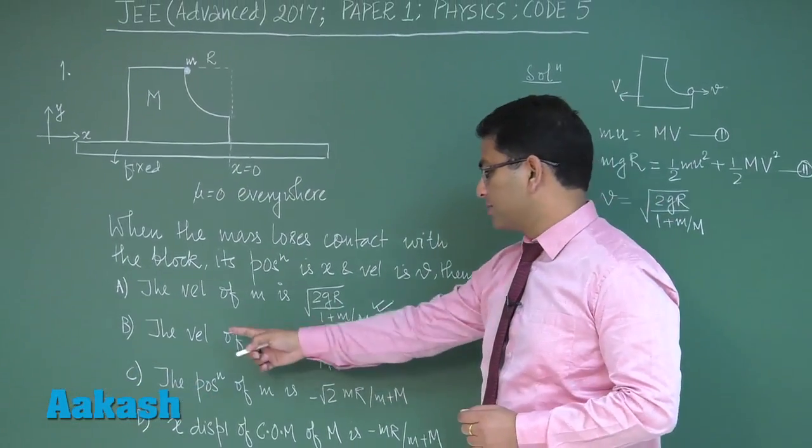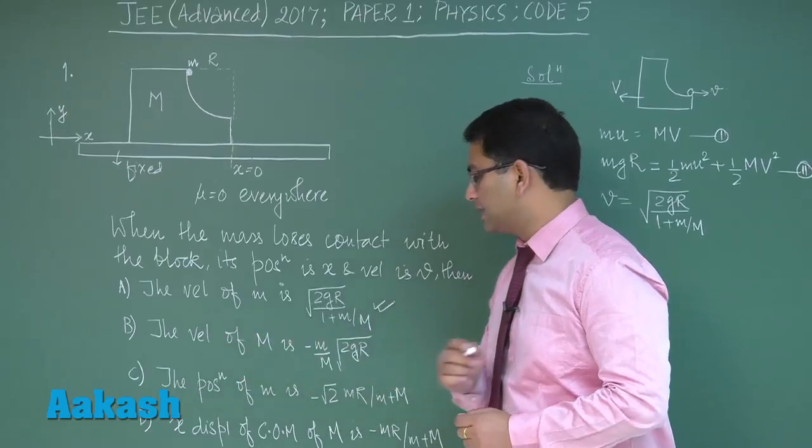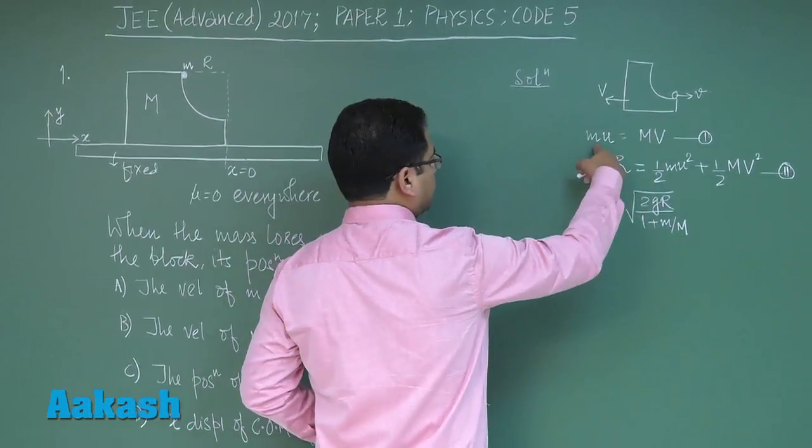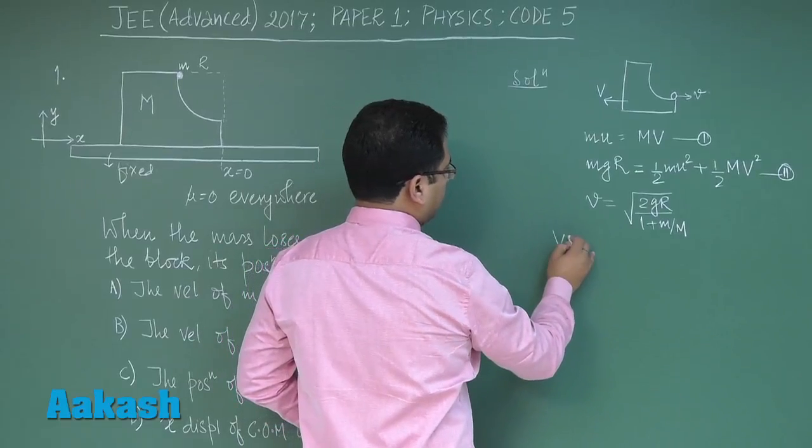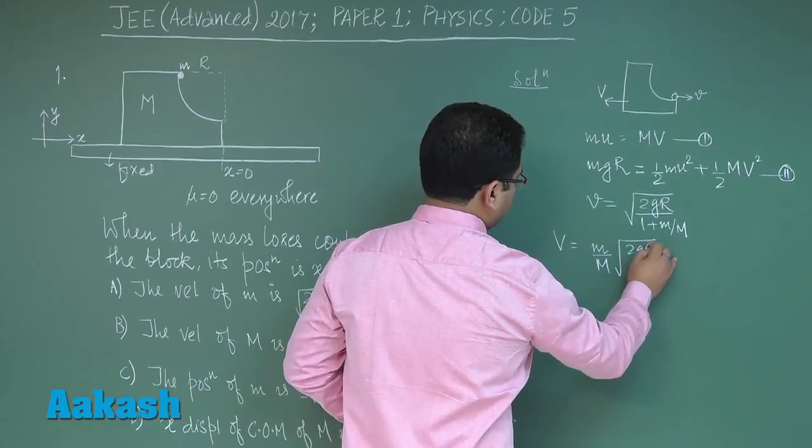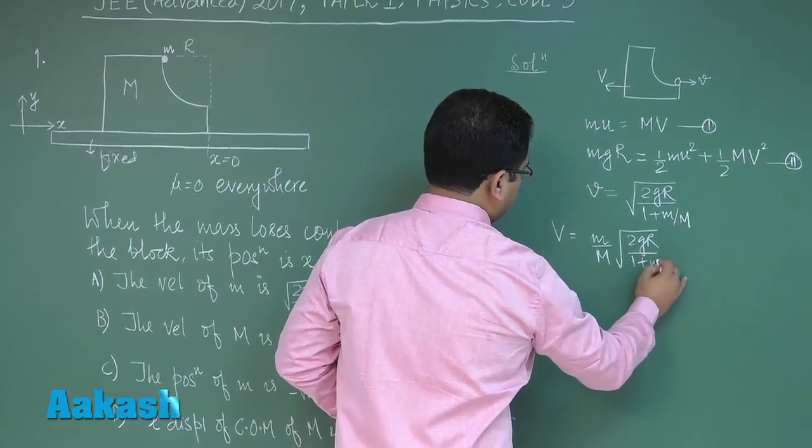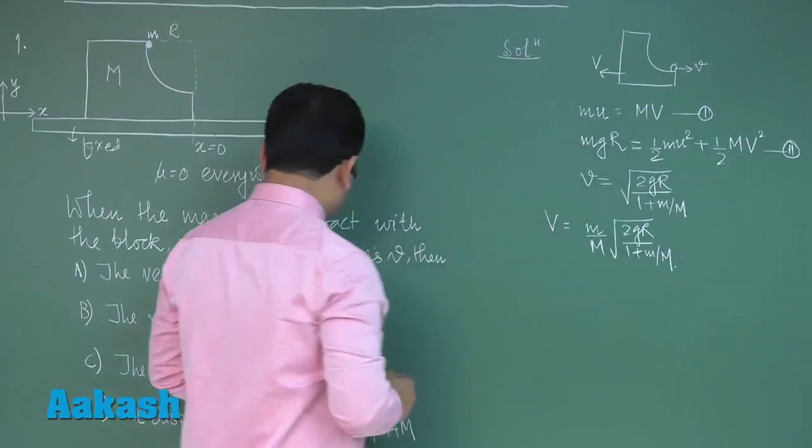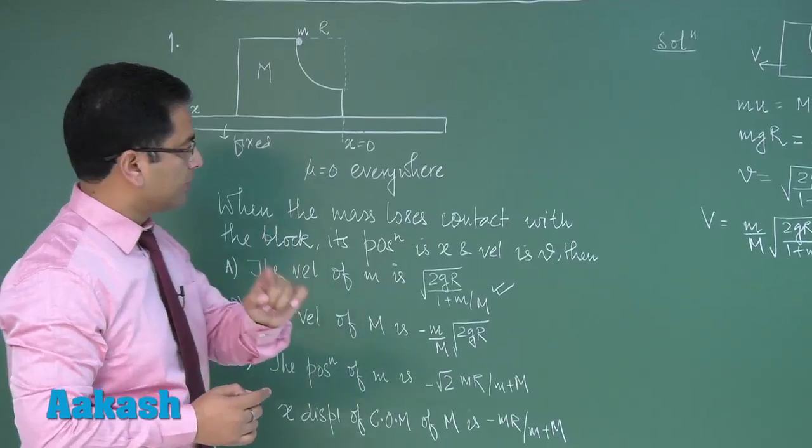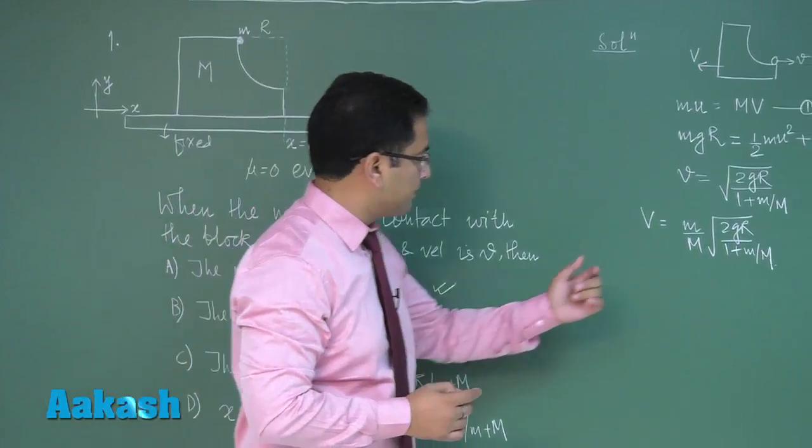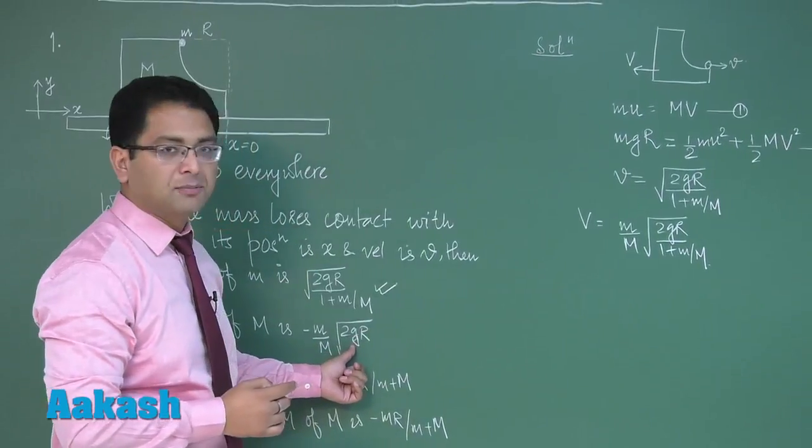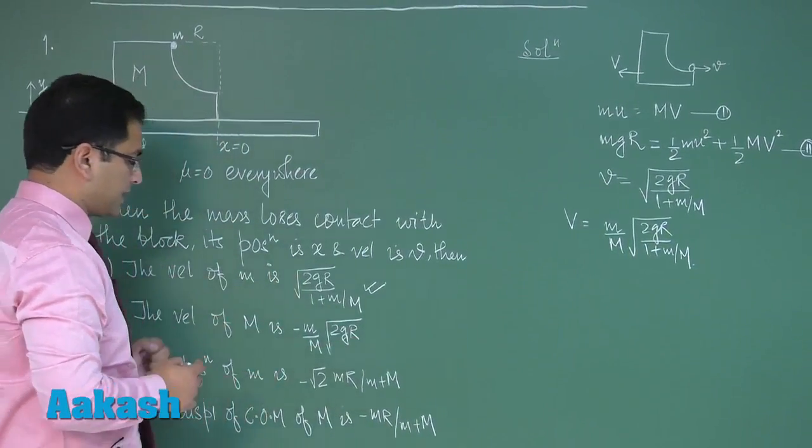Now let's verify for option number B. We need to calculate the velocity of capital M. By using this equation straightforward we get capital V would be m by M into root 2gR by 1 plus m by M. The negative sign clearly indicates the velocity is in the left direction but be careful everything is same but this denominator is missing in the given option so option number B would be taken incorrect.